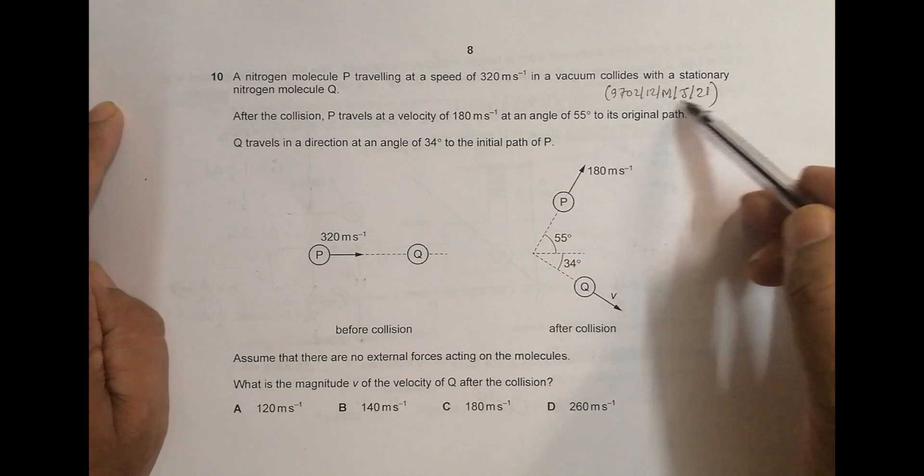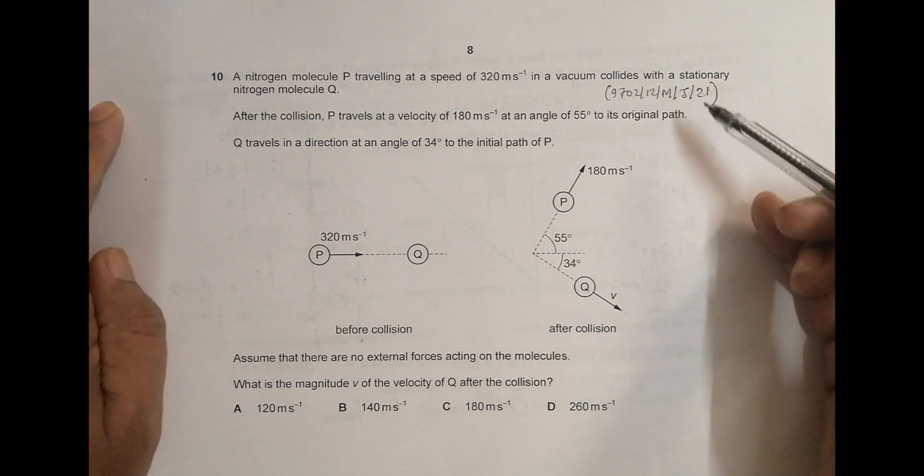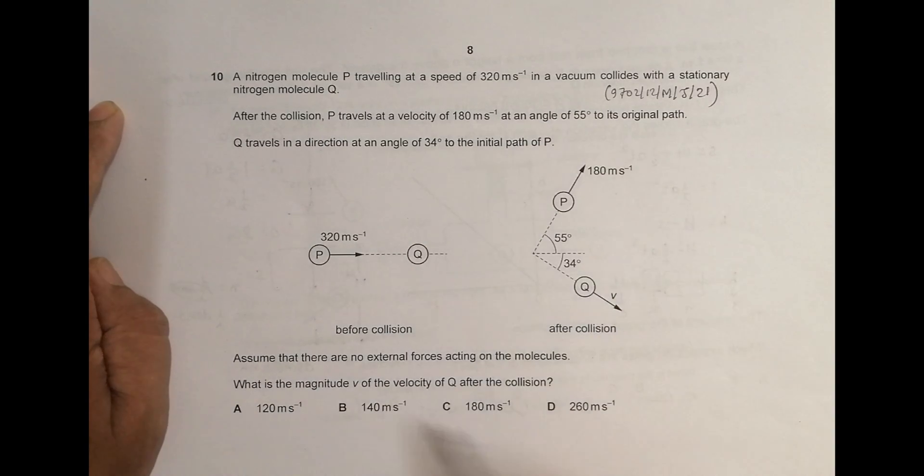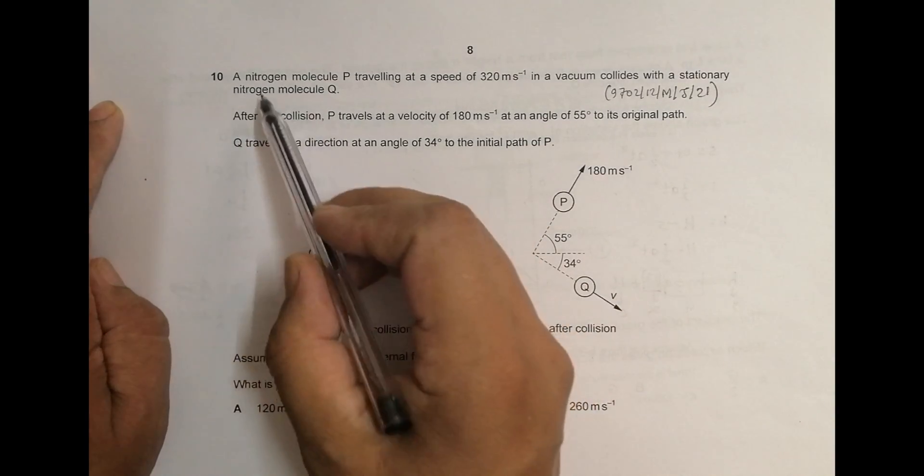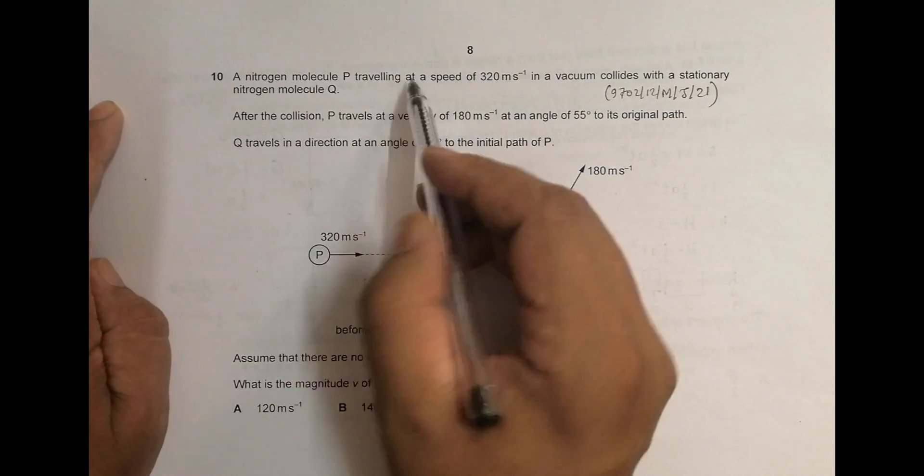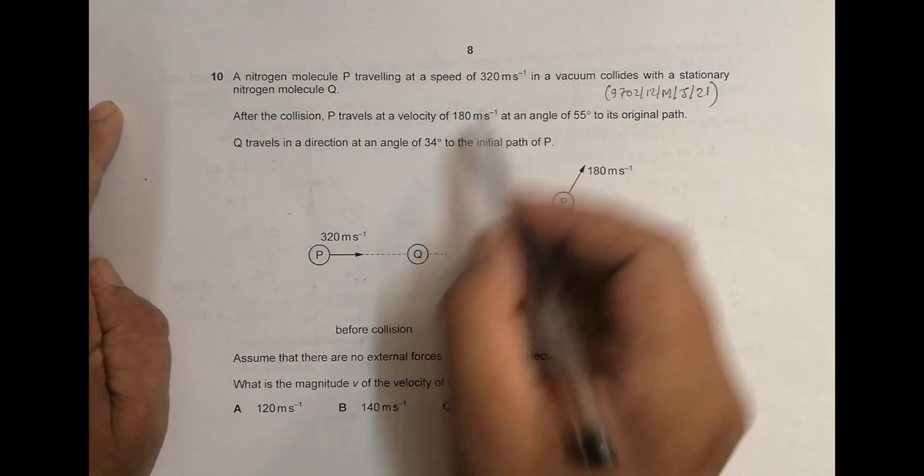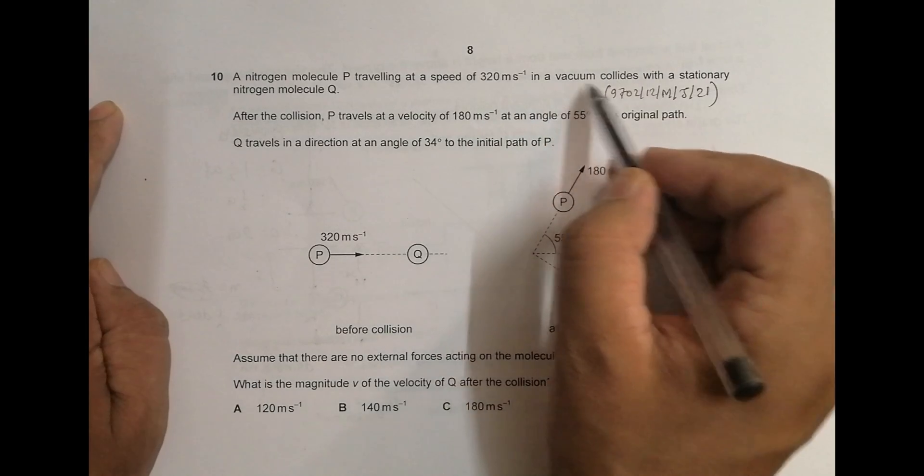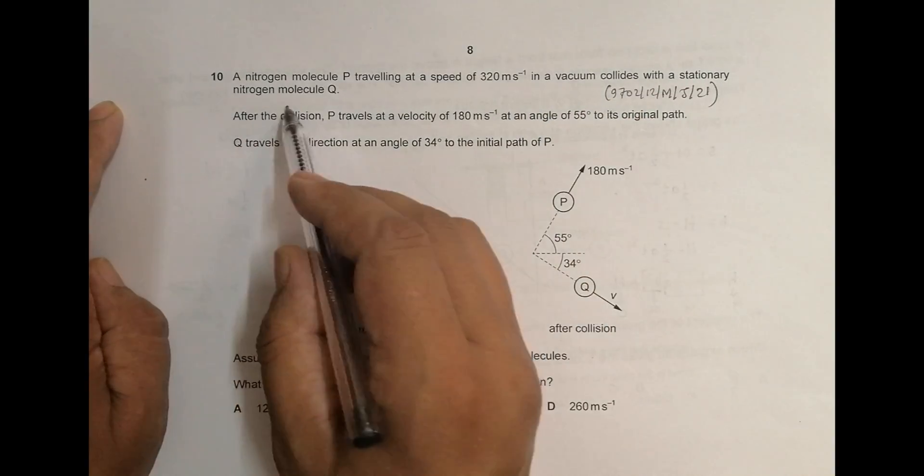Hello folks, this is 2021 May June paper 1-2 and the question number is 10. As the diagram represents, it belongs to collision. So it says a nitrogen molecule P travelling at a speed of 320 meter per second in a vacuum collides with a stationary nitrogen molecule Q.